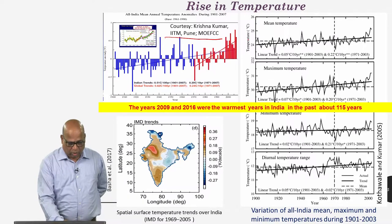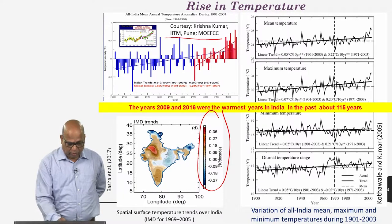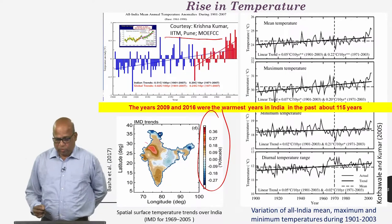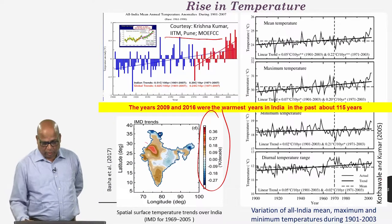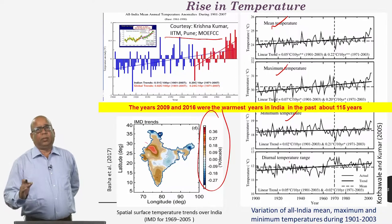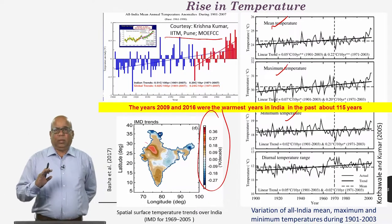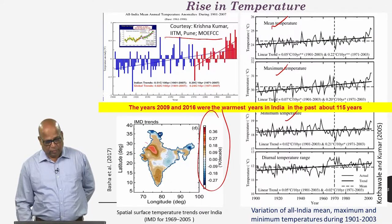Similarly, Basha et al. show that the regional surface temperature trends — as you can see, many places show an increasing trend. Other studies, for example Kotwal and Kumar, also show a continuous increasing trend. What is important is we not only look at the mean temperature, but maximum, minimum as well as the diurnal temperature changes. Diurnal temperature changes typically refer to the temperature difference between day and night.